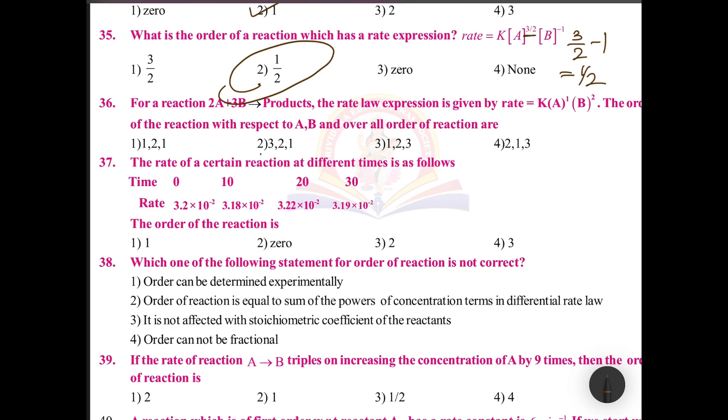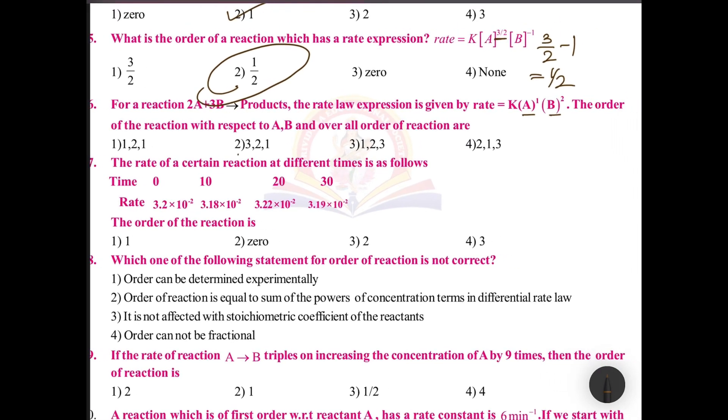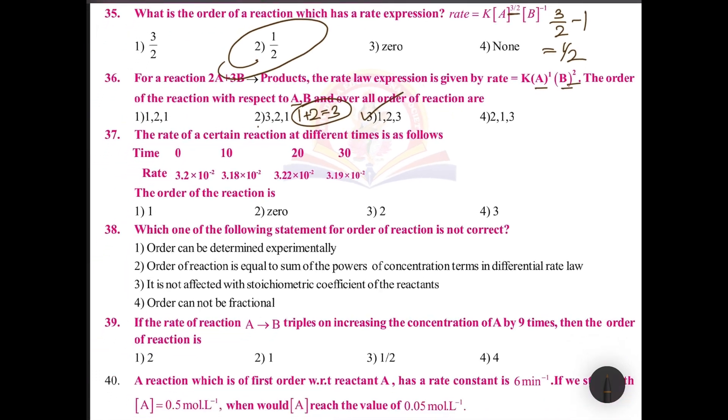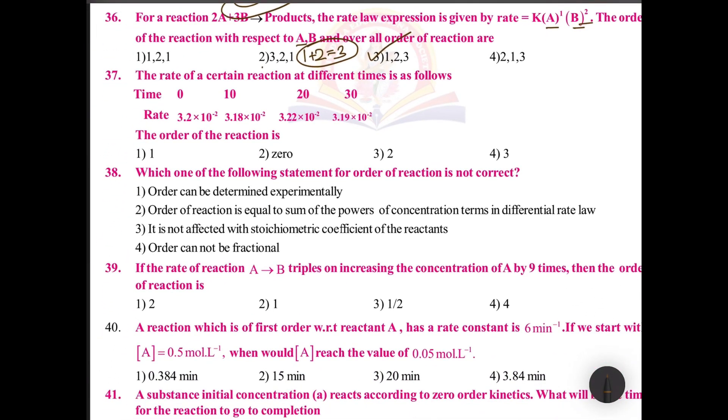For a reaction 2A plus 3B gives rise to products, the rate law expression is given by A to the power 1, B to the power 2. So the order with respect to A is 1, with respect to B is 2, and overall order is 1 plus 2 equals 3. So 1, 2, and 3.